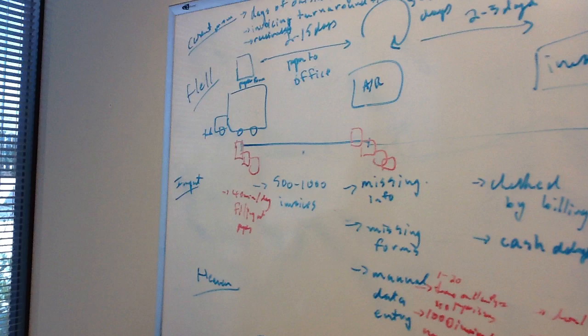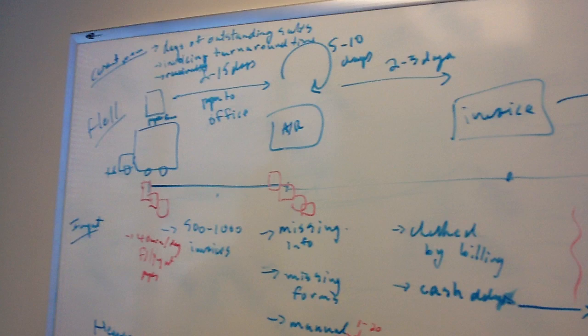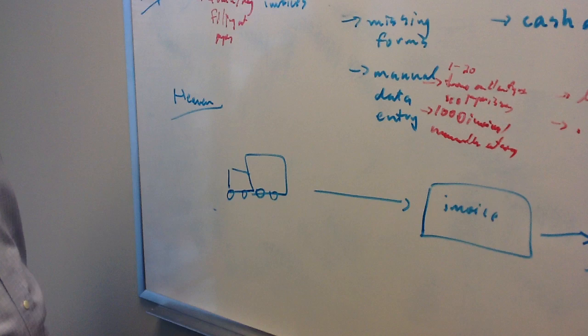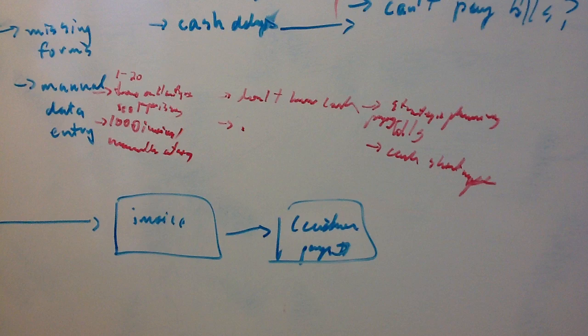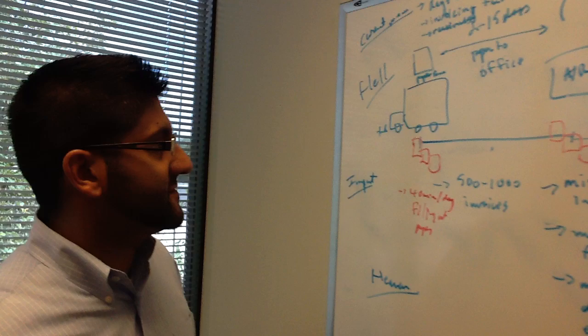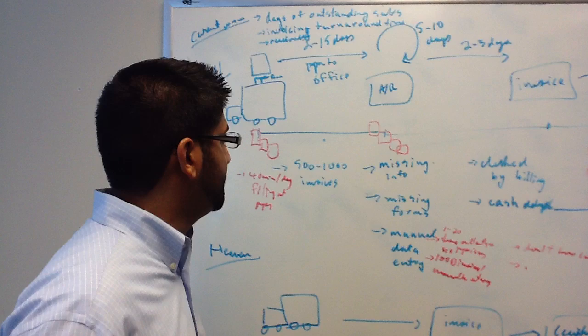Okay, so what we have here are the hell. This is the current situation of how a business is being run before they work with us. And down below is the heaven. It's just the truck to the invoice to the payment from the customer. Great. So I'll start off at a high-level view just to give you an idea of how a lot of these companies work in the transportation, construction industry.